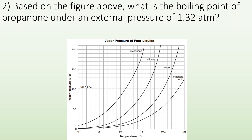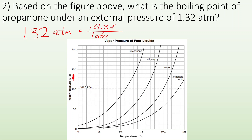Number two: based on the figure, what is the boiling point of propanone under an external pressure of 1.32 atmospheres? The units on this chart are in kilopascals, so I have to convert 1.32 atmospheres into kilopascals. I know that for every one atmosphere there is 101.3 kilopascals. When I do the math, I end up with 134 kilopascals.